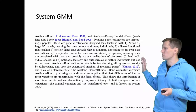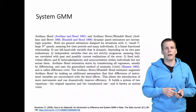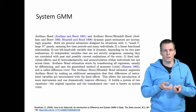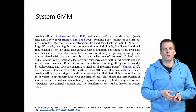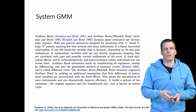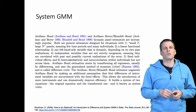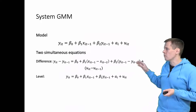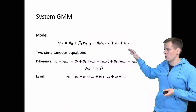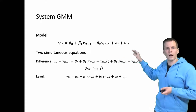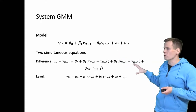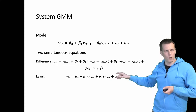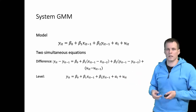There is also another version of this estimator called system GMM. The idea is that we can make this estimator more efficient by introducing additional assumptions and equations. It's called system because it estimates two simultaneous equations. We have the levels model that we want to estimate. We estimate beta one from the difference equation and beta one from the original level equation — but this is endogenous because A_i correlates with Y_{t-1}.